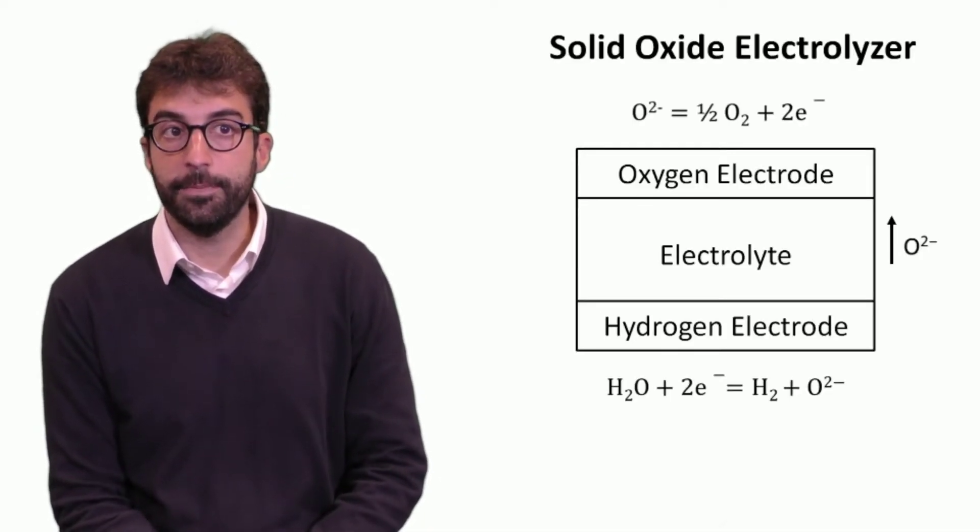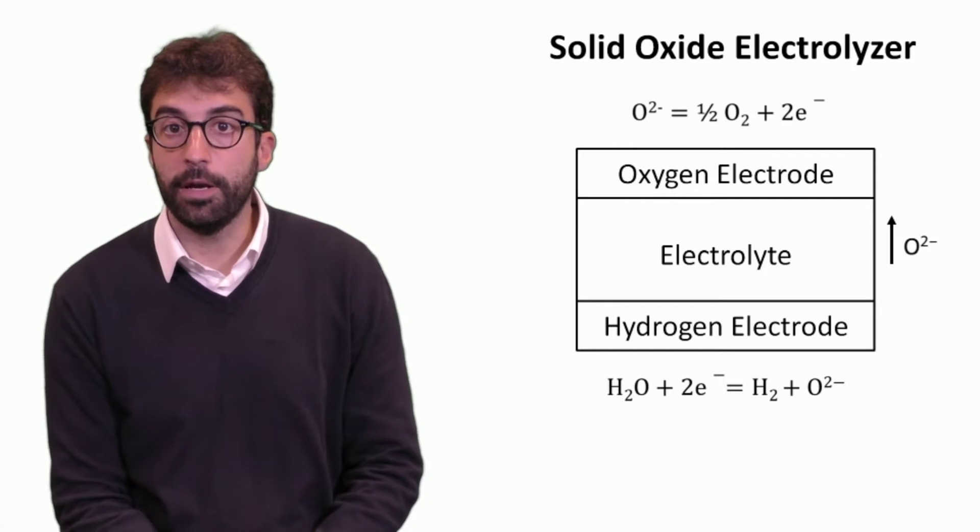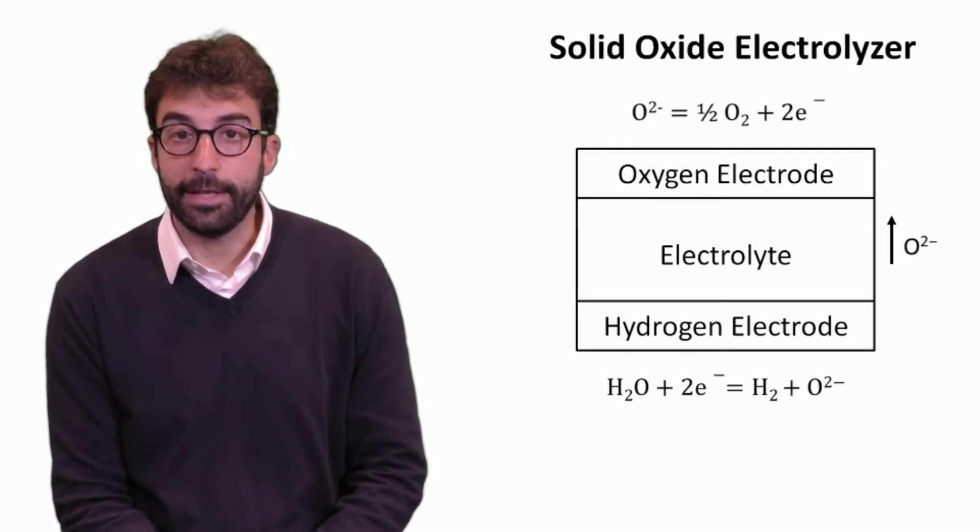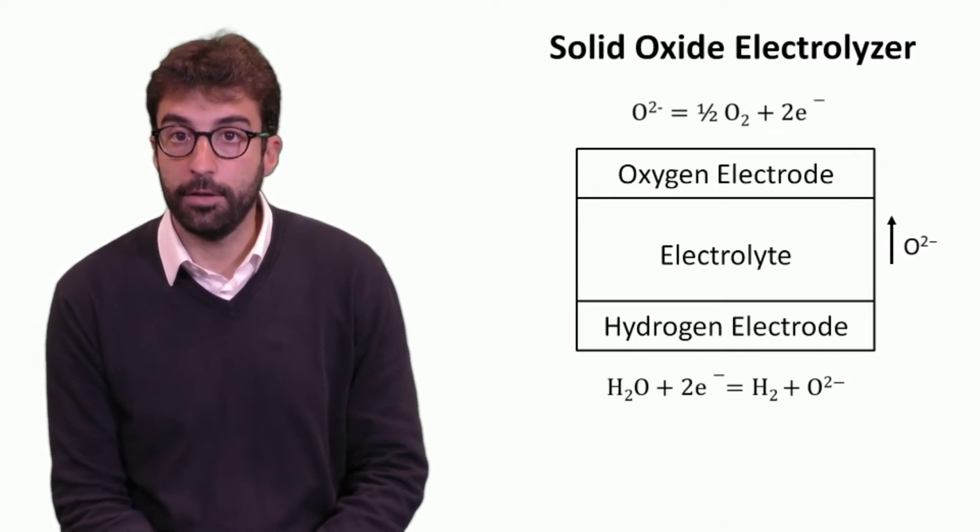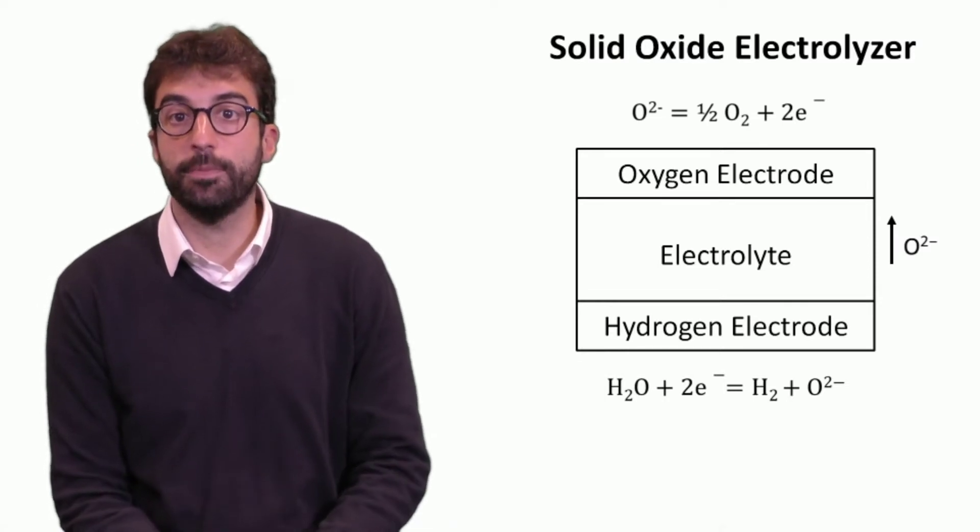In solid oxide electrolyzer, oxides flow from the hydrogen electrode to the oxygen electrode. So the electrolyte's peculiarity is to allow the flow of oxides. At the hydrogen electrode, steam is decomposed into hydrogen and oxide, and at the oxygen electrode, oxides are composed back into oxygen.